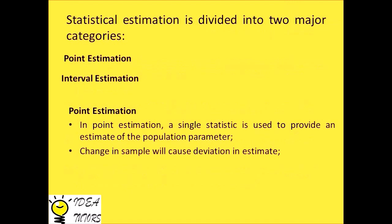Statistical estimation is divided into two major categories: point estimation and interval estimation. In point estimation, a single statistic is used to provide an estimate of the population parameter. A change in sample will cause deviation in the estimate.